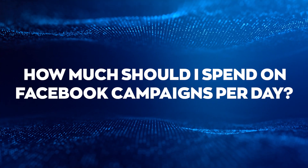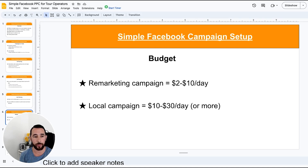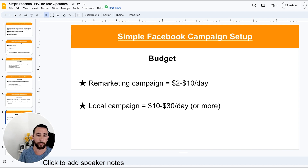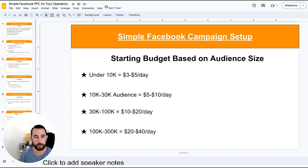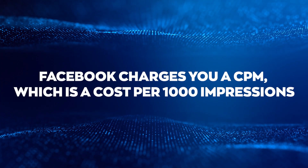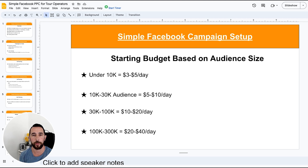Budget is a question we get all the time — how much should you spend on Facebook campaigns per day? For remarketing with a very small list, you can spend a couple of bucks a day up to maybe $10-20 a day at the high end. For local or lookalike campaigns, you can spend anywhere from $10 to $30 a day or more. These are starting-point budgets — you can spend more. Facebook charges you a CPM, which is cost per thousand impressions, so even if the same person sees the ad more than once, you still get charged for that impression.